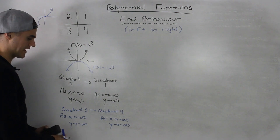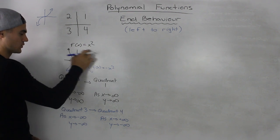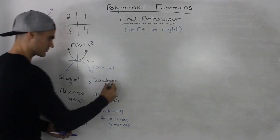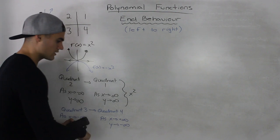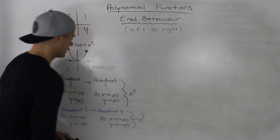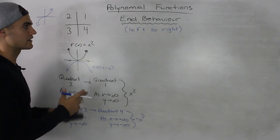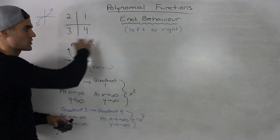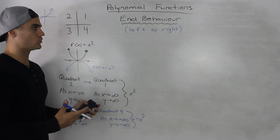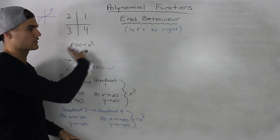A lot of times you're going to have to describe end behaviors in this format — you're not just going to be able to say quadrant 3 to quadrant 4 or quadrant 2 to quadrant 1. You're going to have to describe it in this notation. This end behavior was for x squared, and the end behavior in blue was for negative x squared. But x squared and negative x squared are sort of easy to work with. What if we had a big polynomial like 5x⁵ + 3x⁴ and so on? Can we make a general rule for all polynomial functions so we'll know the end behavior when reading from left to right?